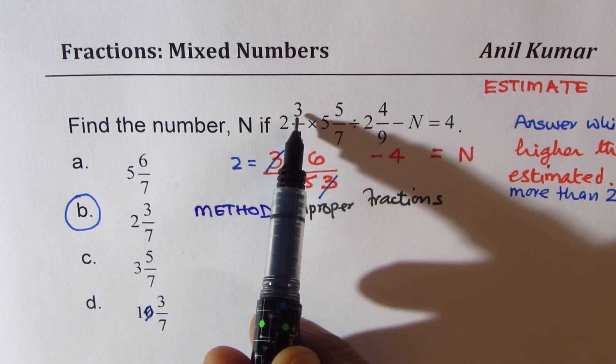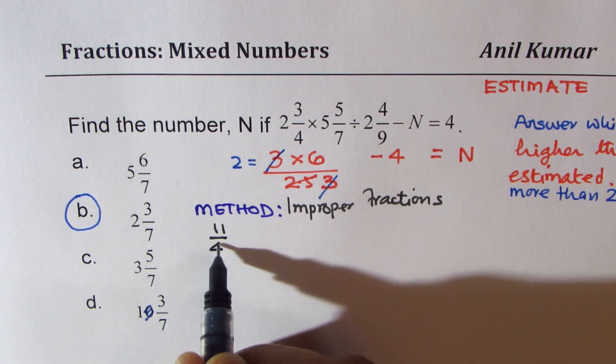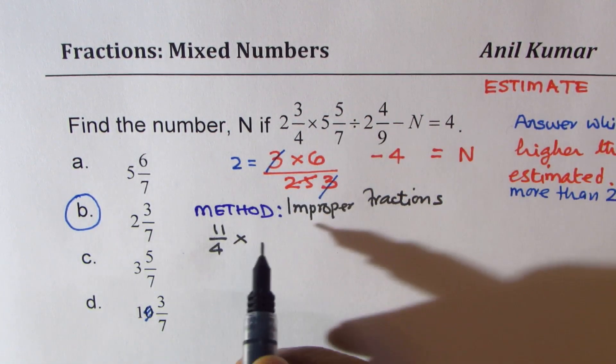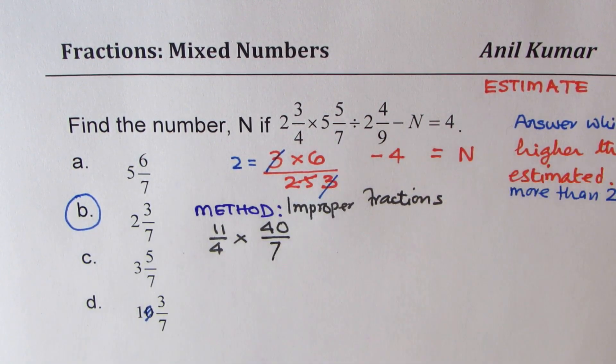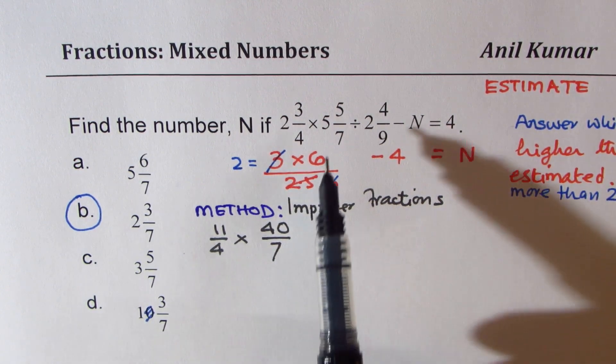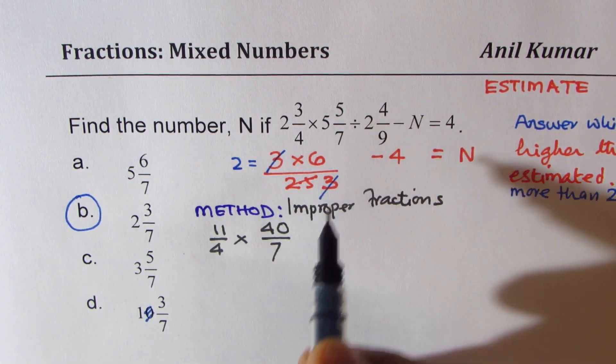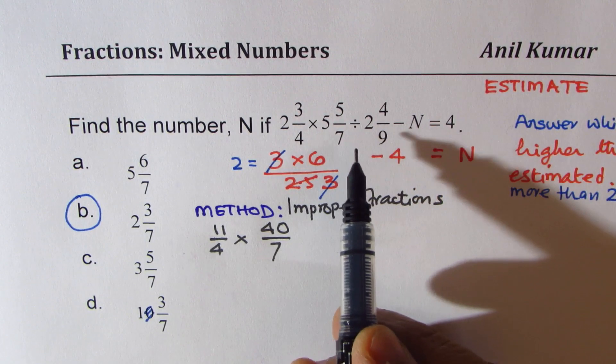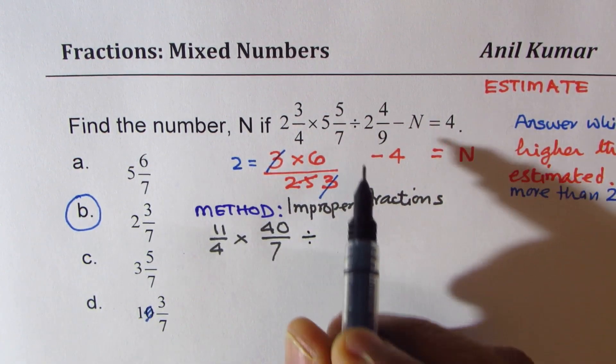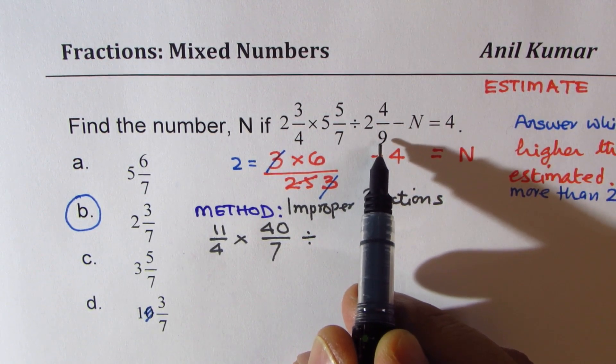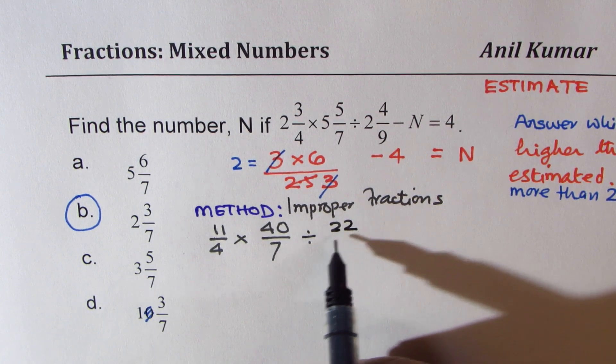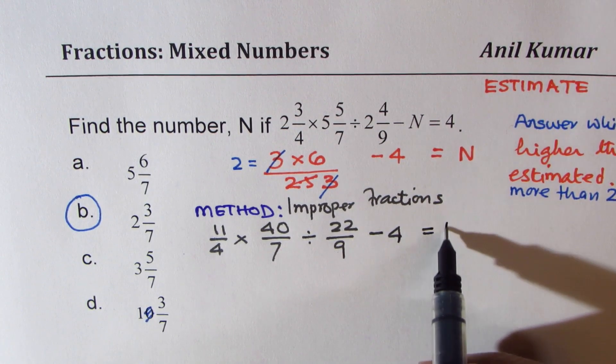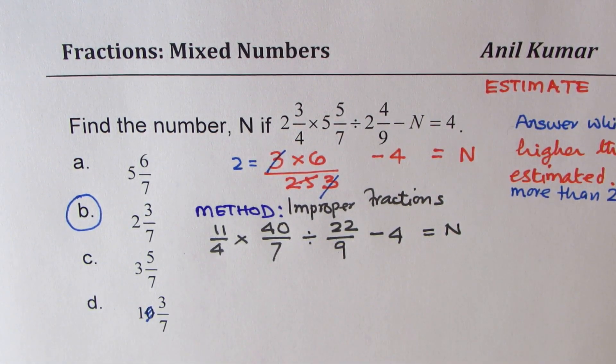2 times 4 is 8. 8 plus 3 is 11. So, the first term is 11 over 4 times. 5 times 7 is 35. Plus 5 is 40. Now, this is a very fast process. I am just going slow so that those who don't know how to do it, they can understand. Division is reciprocal of multiplication. So, I am changing this sign to multiplication. 2 times 9 is 18. 18 plus 4 is 22. So, we get 22 over 9, and we will get this 4 on this side and that gives you N.